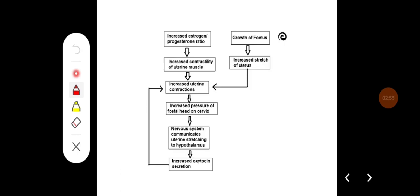This diagram shows the parturition reflex: Increased estrogen to progesterone ratio causes increased contractility of uterine muscles.